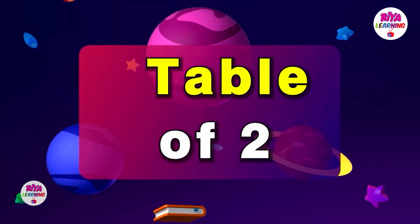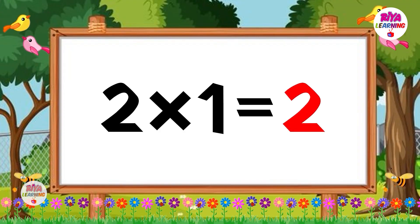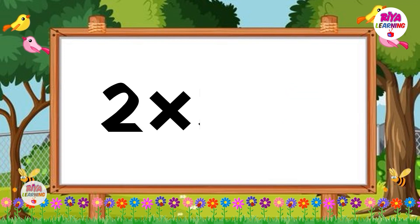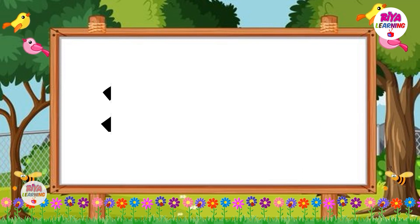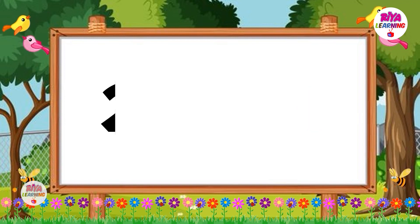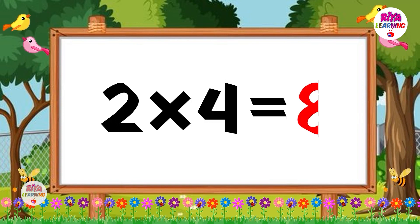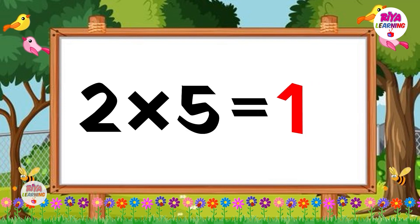Table of two. Two ones are two. Two twos are four. Two threes are six. 2 fours are 8. 2 fives are 10.